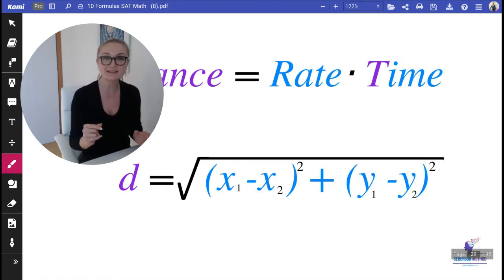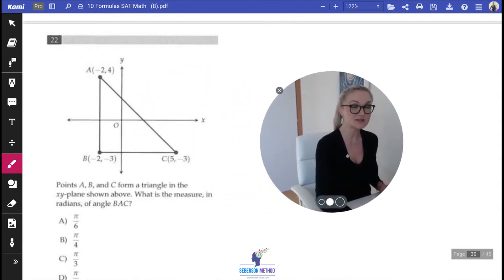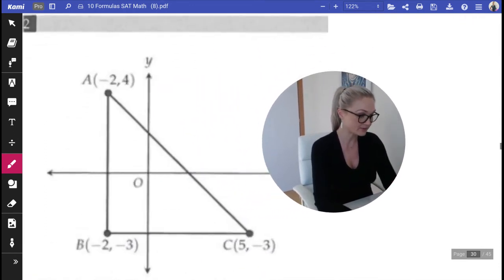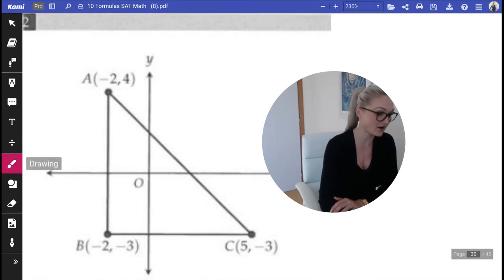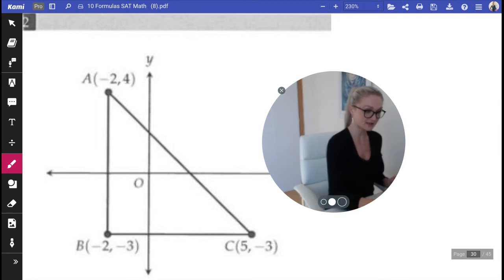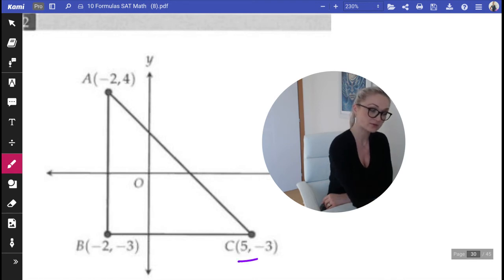I can give you an example. We'll solve this problem later, so don't try to solve it now. What if you needed to find the distance of AC? You would use your distance formula. For example, we would make -2 equal x₁ and 5 equal x₂, 4 would be y₁, and -3 would be y₂.